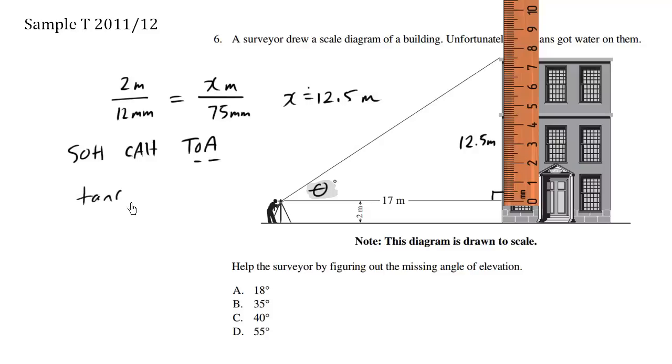We know that tan theta equals opposite over adjacent, which happens to be 12.5, that's the opposite, over adjacent, 17.